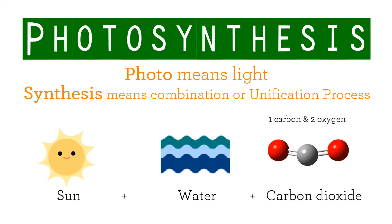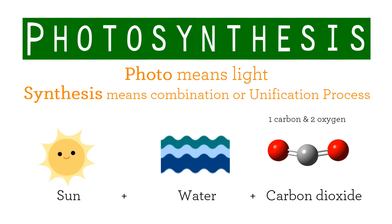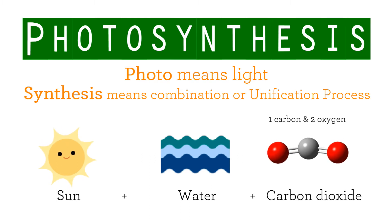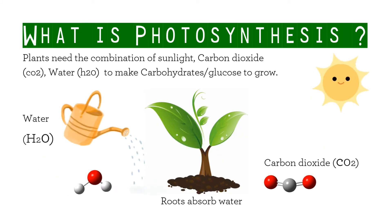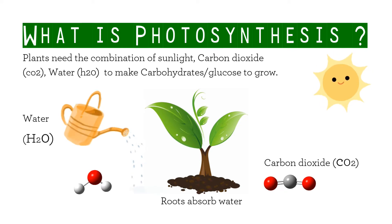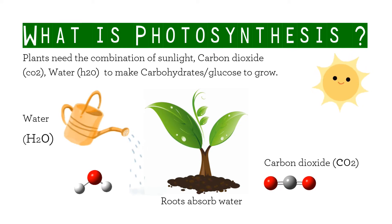Photosynthesis — photo means light, and synthesis means combination or unification process. Plants need the combination of sunlight, carbon dioxide, and water to make carbohydrates and glucose to grow.